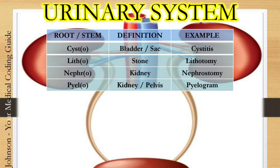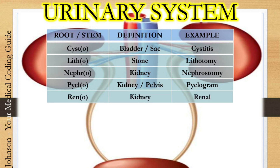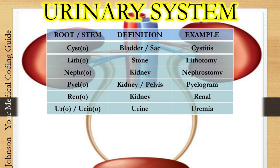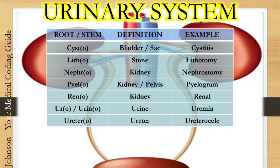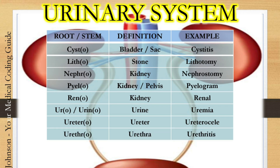The next one is pyelo — pyelo means kidney pelvis. Example: pyelogram, which means the x-ray imaging of your kidneys. The next one is reno — reno means kidney. Example: renal, which means pertaining to the kidneys. The next one is uro or urino — it means urine. Example: uremia, which means excess urea in the blood. The next one is uretero — uretero means your ureter. Example: ureterocele, which is a herniation of your ureter. The next one is urethro — urethro means your urethra. Example: urethritis, which is inflammation of the urethra.